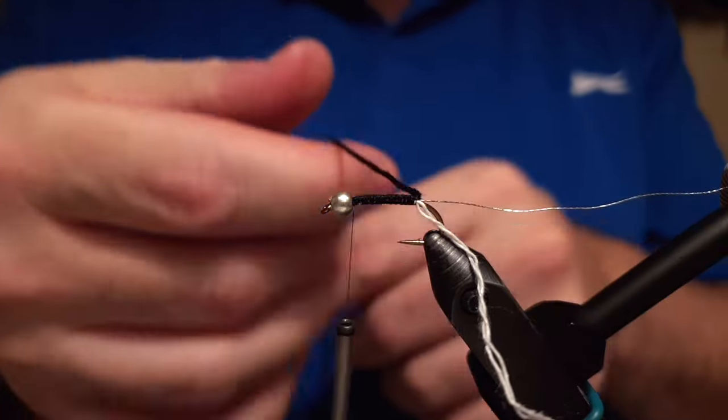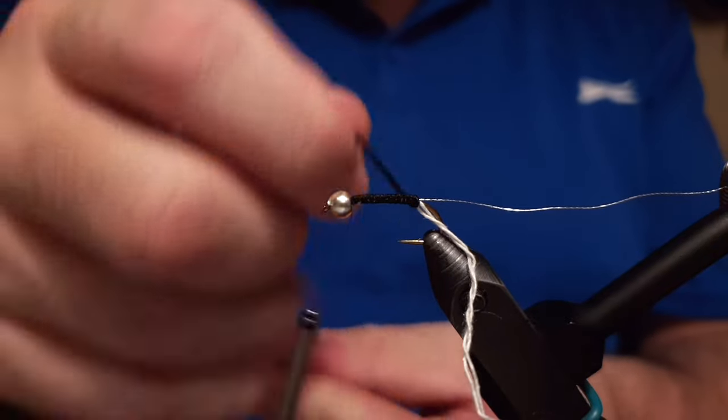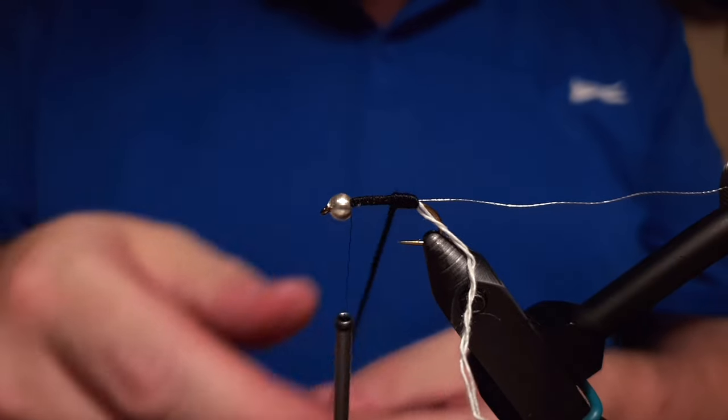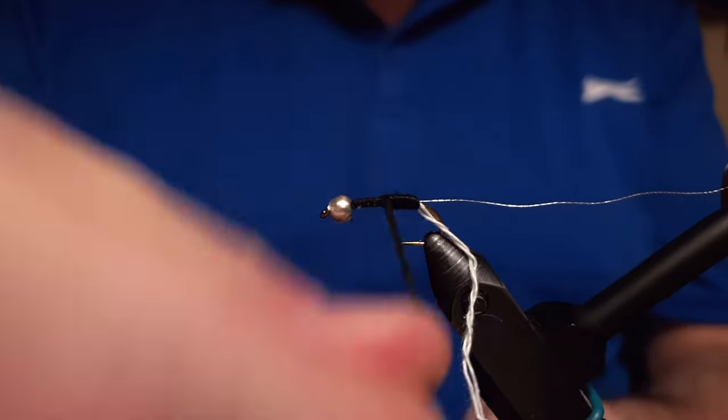So now the body is ready to form. We will form the body by wrapping the Aurora yarn around it.